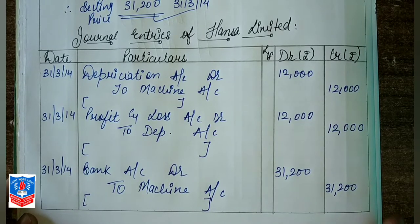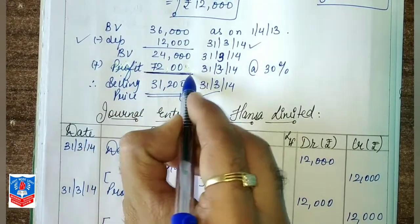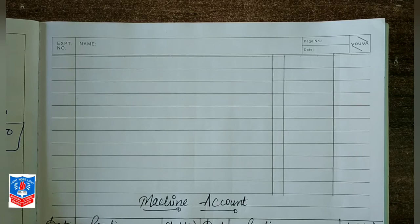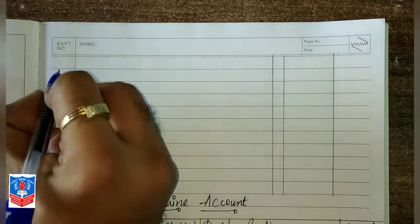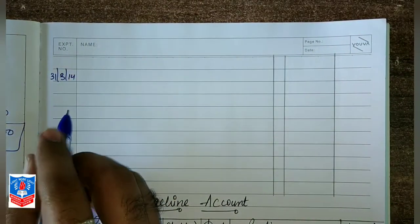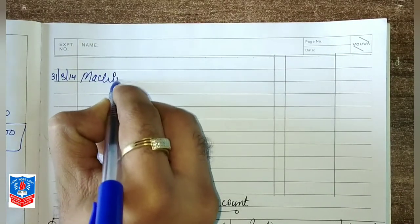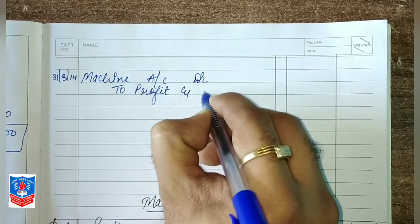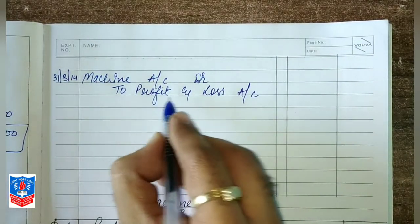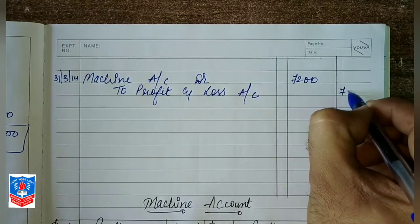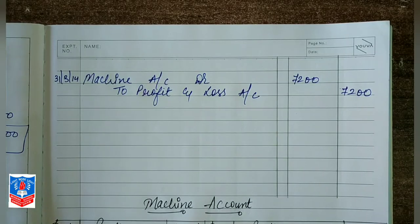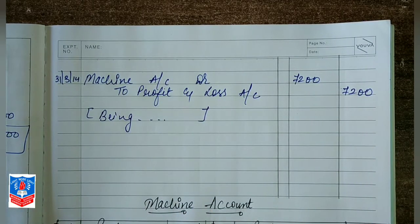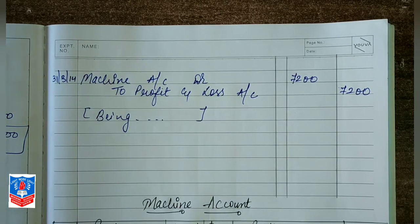One more entry is needed — for the profit. We made a profit of 7,200. Losses are debited while profits are always credited — that is our income. On 31/3/14, the income was generated from the machine, so: Machine Account debit to Profit and Loss Account with 7,200. Don't forget to write the narration: 'Being machine sold on profit and transferred to P&L account.'